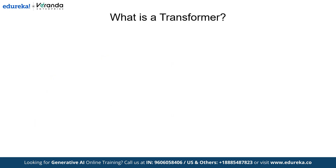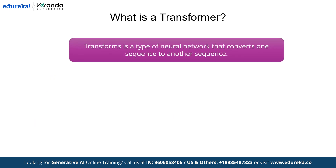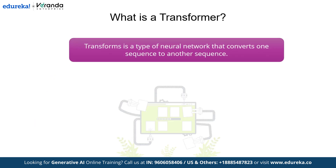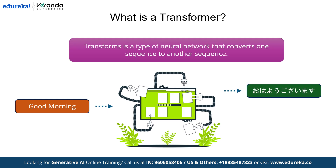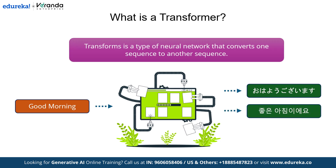So, what is a transformer? Transformers operate on a concept called sequence-to-sequence learning. Essentially, they take a sequence of tokens as input and predict the next token in the output. A great example of this is language translation. Imagine inputting 'good morning' in English, and the transformer processes this and outputs the translation in languages like Japanese, Korean, or German.